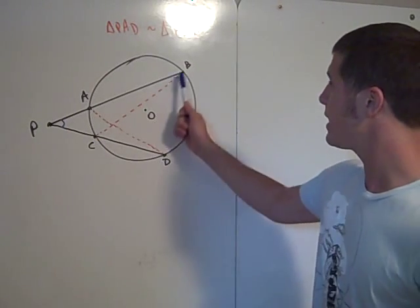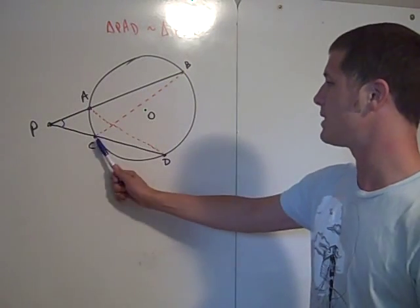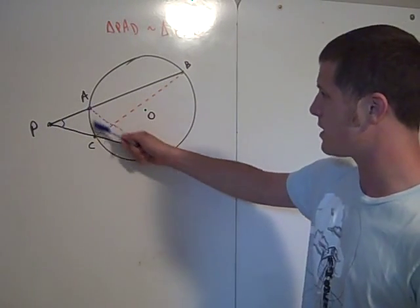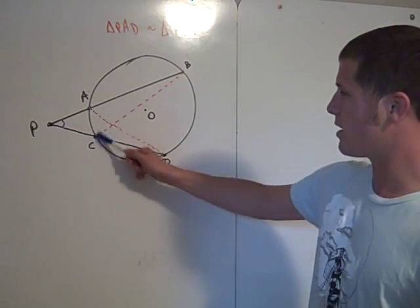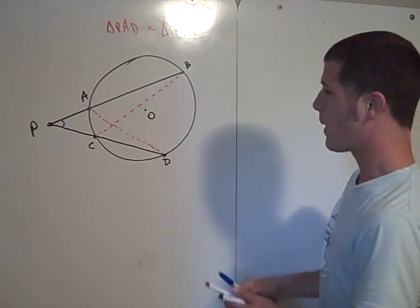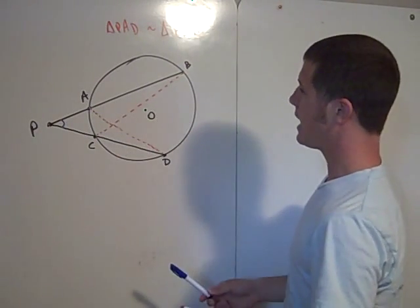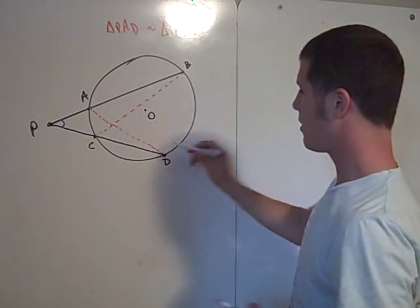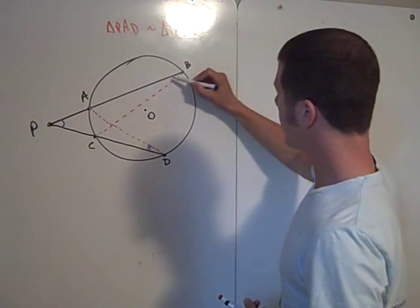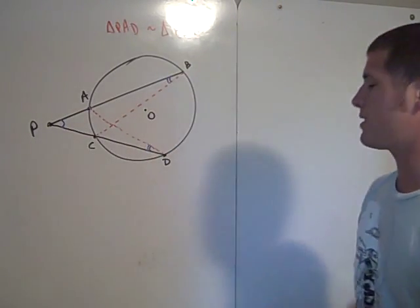Well, check it out. Angle CBP. Well, let's say CBA intercepts this arc AC. And angle CDA intercepts this arc AC. And so, if CDA intercepts arc AC and CBA intercepts arc AC, well, then angle D and angle B are both half the measure of CA, and thus they are congruent.